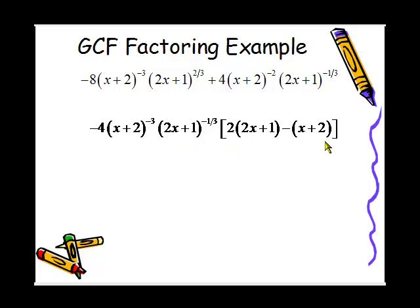The next step is to simplify the leftovers. So we'll distribute the 2 and distribute the minus and combine the like terms. And we get 3x once we've simplified the leftovers.